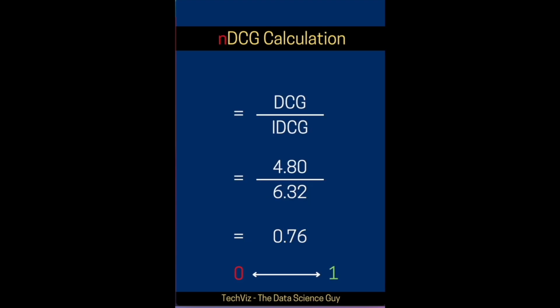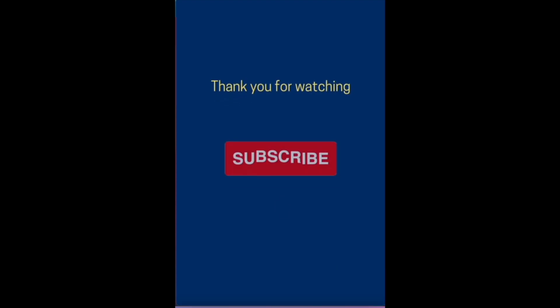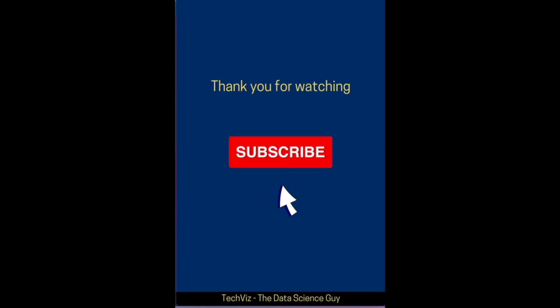For those two numbers, the normalized DCG would be the ratio of DCG and IDCG, which comes to 0.76. Now NDCG can vary from 0 to 1. The closer it is to 1, the better results you have from your search ranking system. Yeah, that's it for this short. Thank you so much.